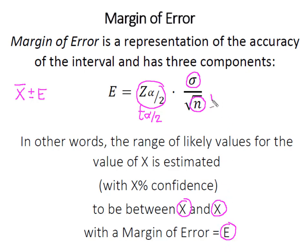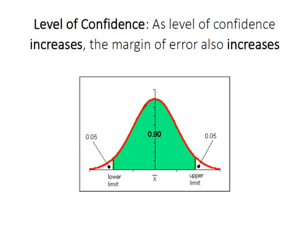So let's take a look at each of these three components individually. First is our level of confidence. So as our level of confidence increases, the margin of error also increases. So in this case we've constructed a 90 percent confidence interval.